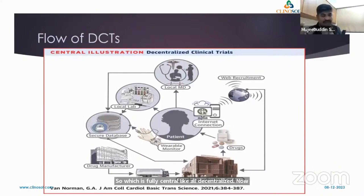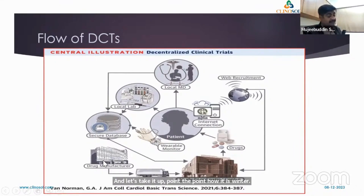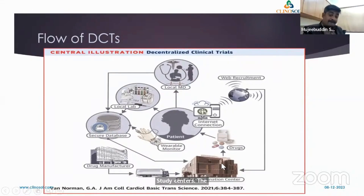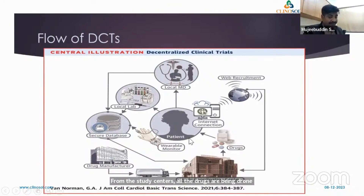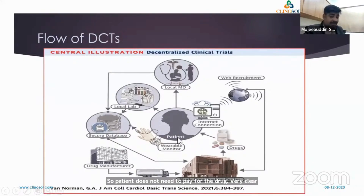This illustration shows clearly how a decentralized clinical trial is conducted. The drug manufacturer manufactures the drug and transports it to the study centers. The study centers maintain the drugs, and from there, drugs are drone-based dispensed directly to the patient's home. The patient does not need to wait for the drug — it is delivered directly from the hospital or study center.